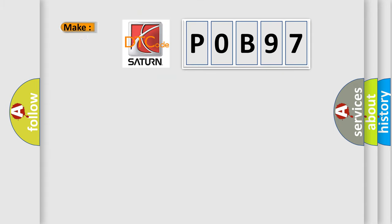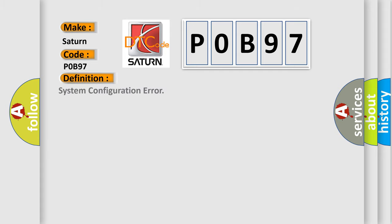So, what does the Diagnostic Trouble Code P0B97 interpret specifically for Saturn car manufacturers? The basic definition is System Configuration Error. And now this is a short description of this DTC code.